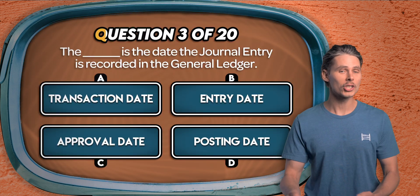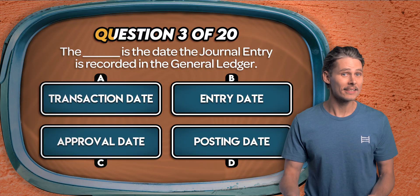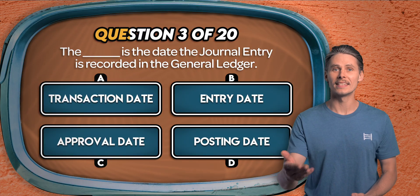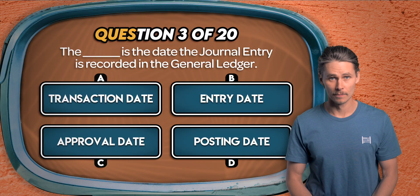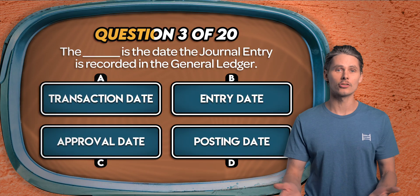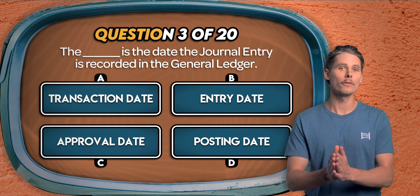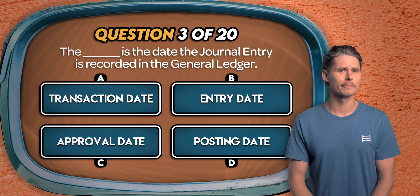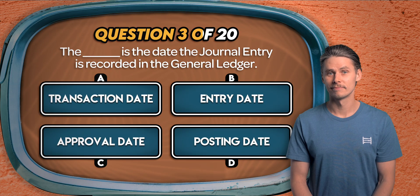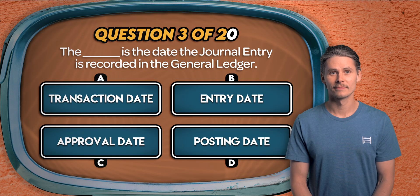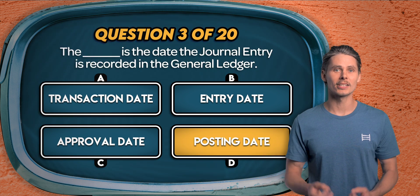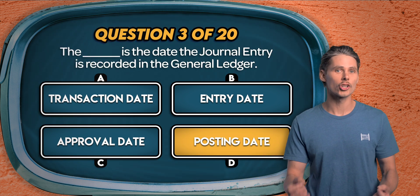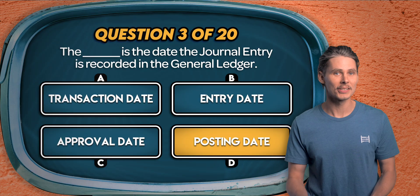Question 3. Which date is the date that a journal entry is recorded in the general ledger? Is it the transaction date, entry date, approval date, or posting date? D again. The posting date determines when a journal entry affects account balances.